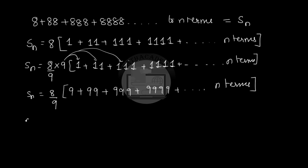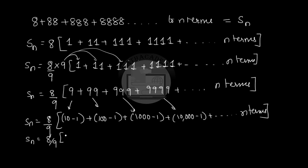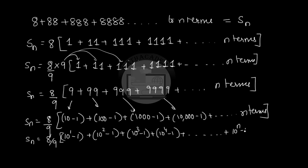Now we write 9 as (10 − 1), 99 as (100 − 1), 999 as (1000 − 1), 9999 as (10,000 − 1), and so on to n terms. So Sn equals (8/9) times the sum of (10¹ − 1) + (10² − 1) + (10³ − 1) + (10⁴ − 1) + ... + (10ⁿ − 1), where the nth term is (10ⁿ − 1).